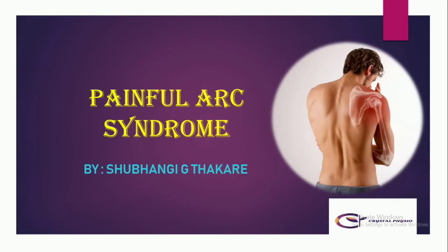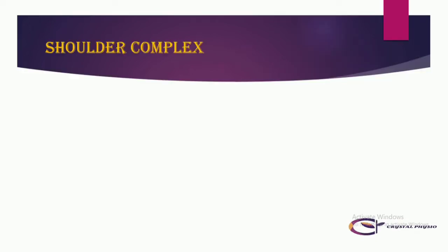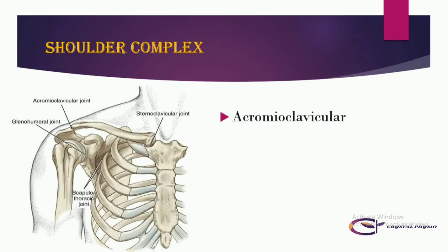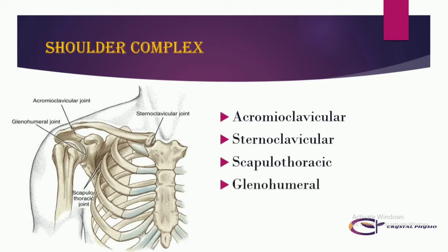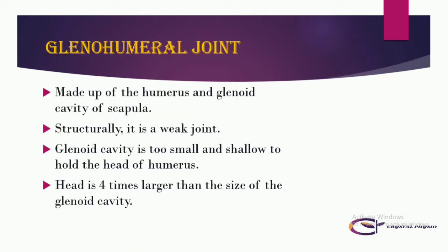Before we start to learn about it, we should know about some anatomy and kinesiology. As we already discussed in our previous video, the shoulder complex is made up of four joints, namely the acromioclavicular joint, sternoclavicular joint, scapulothoracic joint, and the glenohumeral joint.